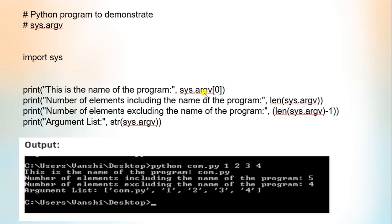As mentioned earlier, argv is an array, so 0 is the index of this array. Here we execute: python com.py 1 2 3 4. Python is the command for executing it, com.py is the file name, and 1, 2, 3, 4 are the integer arguments.